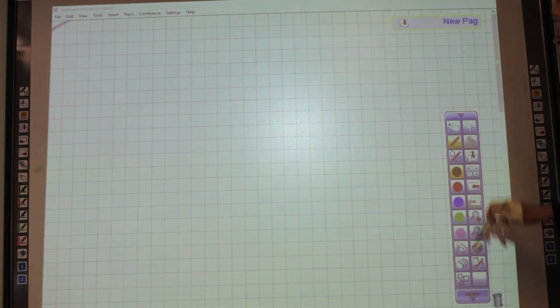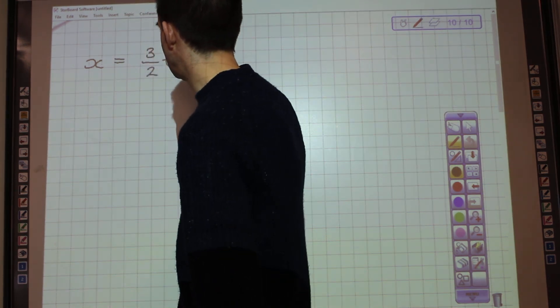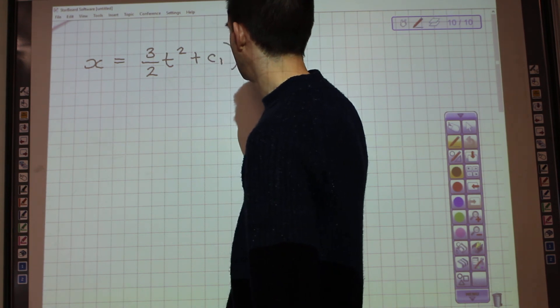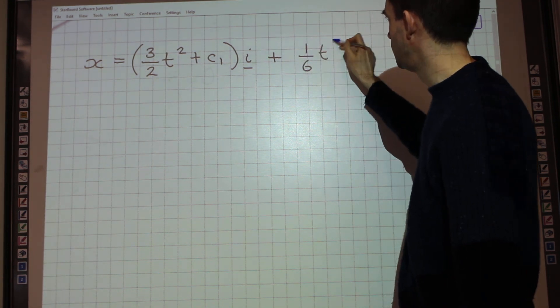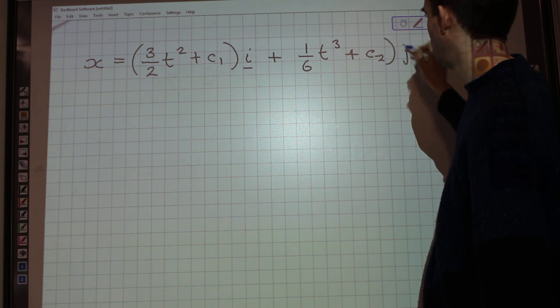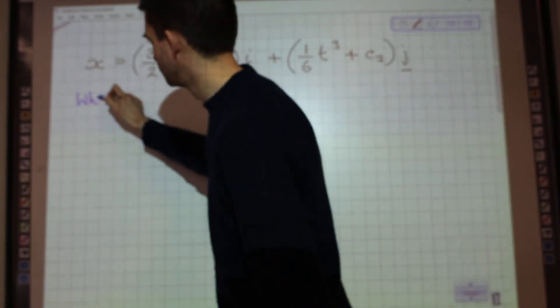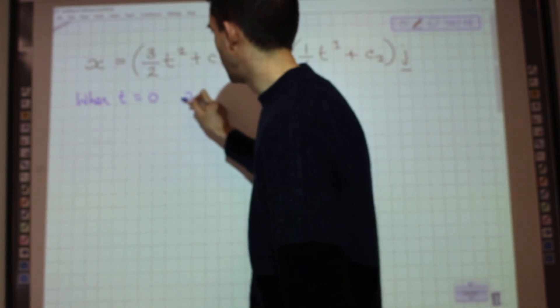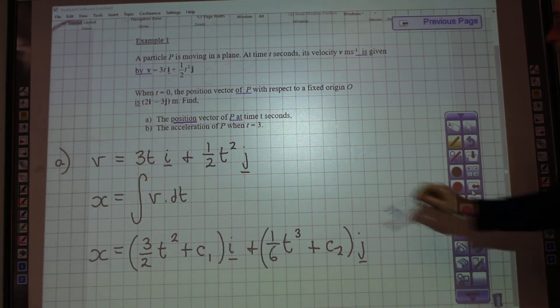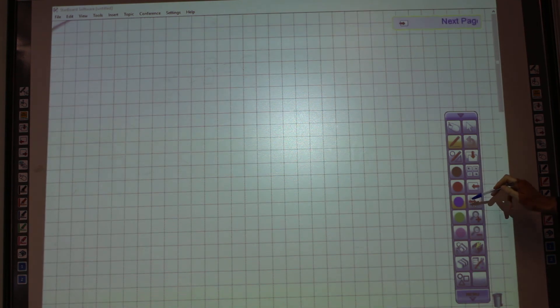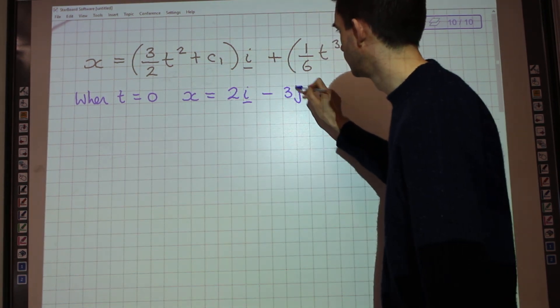So I'm just going to go onto a new page for this. So we had that x equaled 3 over 2 t squared plus c1i, and that was plus 1 sixth t cubed plus c2j. And we're told in the question that when t equals 0, the position vector of p, which I'm calling x, was 2i minus 3j.